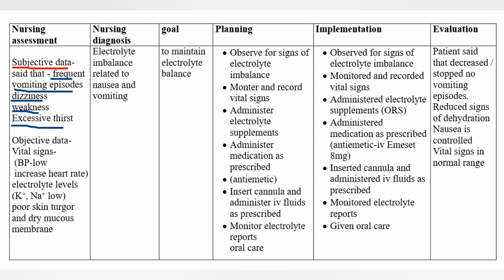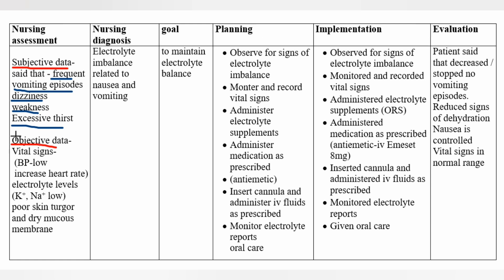Objective data, vital signs: blood pressure is low and heart rate is increased. Electrolyte levels: sodium and potassium levels are low.